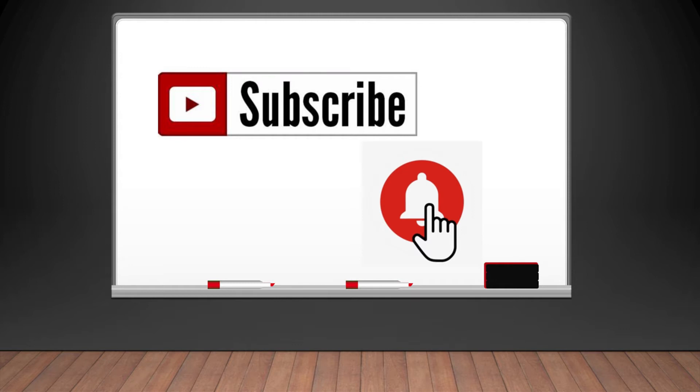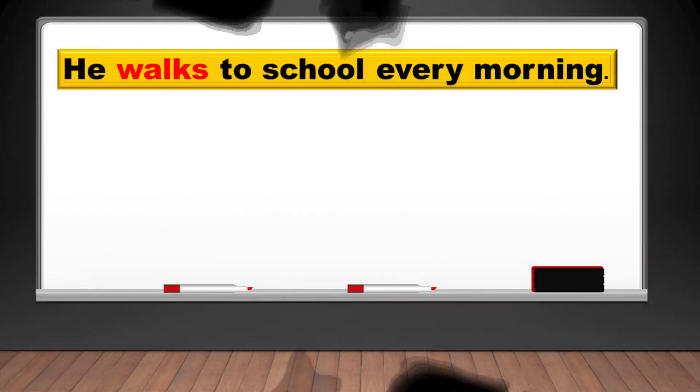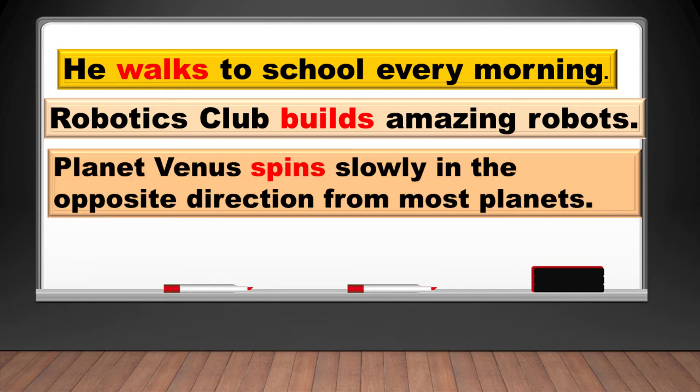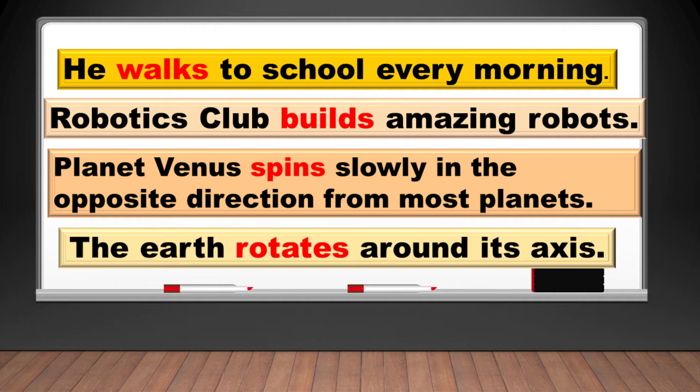Let's read and please note the highlighted action words in each sentence. Number one: He walks to school every morning. Two: Robotics club builds amazing robots. Three: Planet Venus spins slowly in opposite direction from most planets. Four: The Earth rotates around its axis.